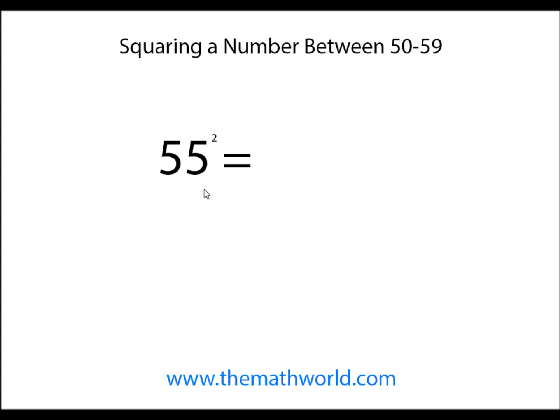The last example is 55 squared. We take 5 and square that. 5 times 5 is 25. And then we take 25 plus the ones digit, which is 5. So 25 plus 5 is 30. So 55 squared is 3,025.